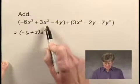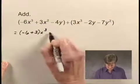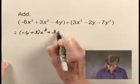Here is an x squared term. Do we see any other x squared terms? No, we don't. So we'll just have plus 3x squared.